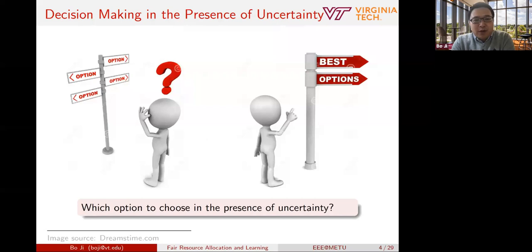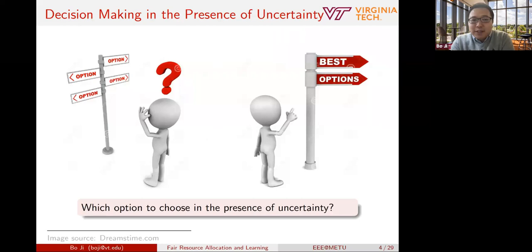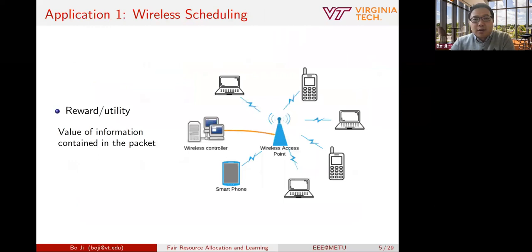Now let's talk about fair resource allocation and learning. All of us need to make a lot of decisions in our everyday life. Whenever possible, we want to choose the best option we have. But in many cases, the challenge is that we have to make decisions in the presence of uncertainty — basically, we have to make decisions without knowing which option is the best. There are many such examples, and I will share three specific ones from the application scenarios I have been looking at.